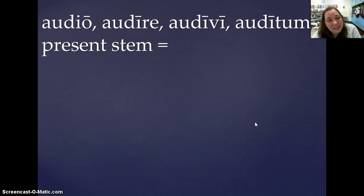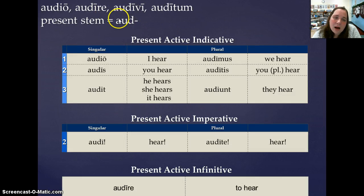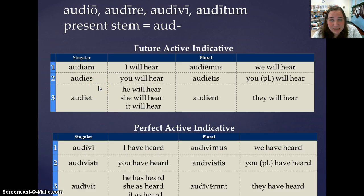Let's see how this conjugates with our paradigm verb: audio, audire, audivi, auditum, which means 'to hear.' You can tell from its second principal part that this is Fourth Conjugation because it has IRE. Take that off, we get our present stem aud-. Present: audio, audis, audit, audimus, auditis, audiunt. Present imperative singular: audi, plural: audite, and our infinitive: audire. The future, looking identical to the Third IO: audiam, audies, audiet, audiamus, audietis, audient. And then our perfect active indicative: audivi, audivisti, audivit, audivimus, audivistis, audiverunt.